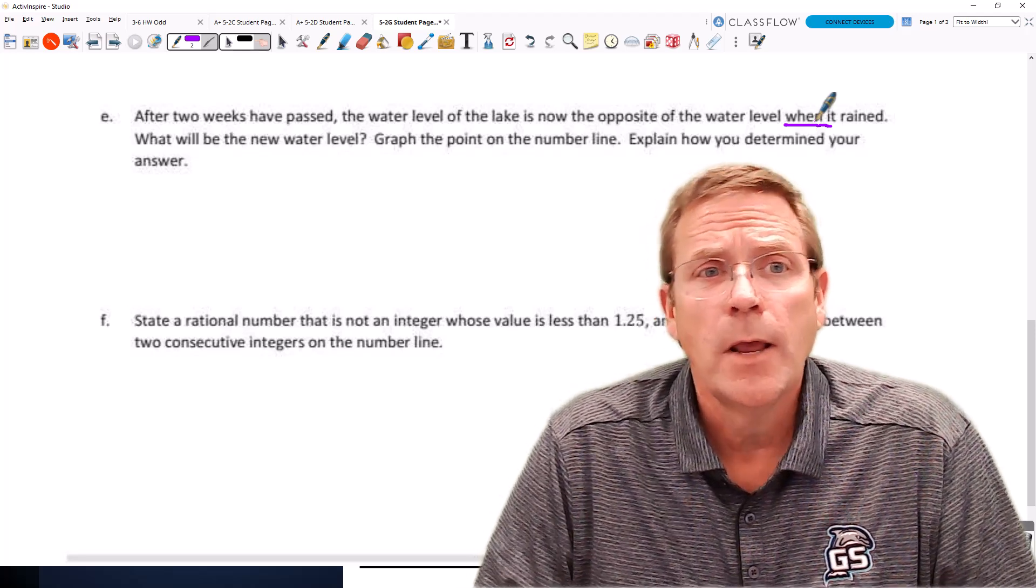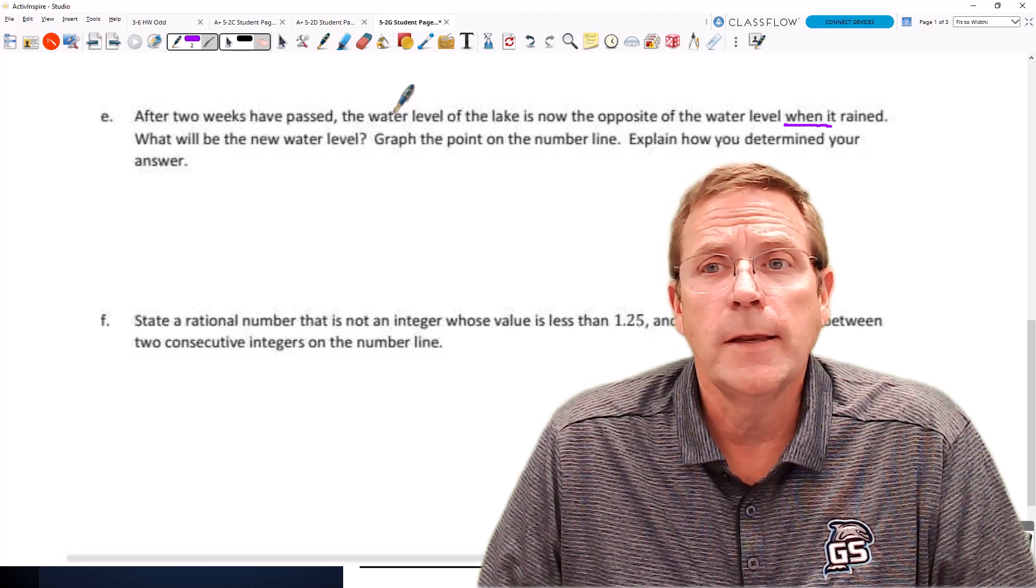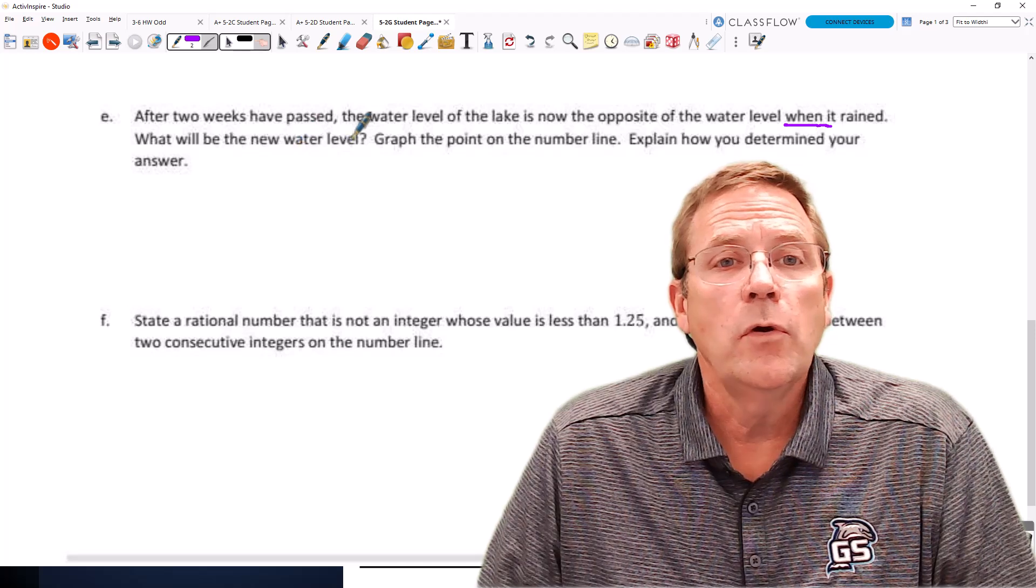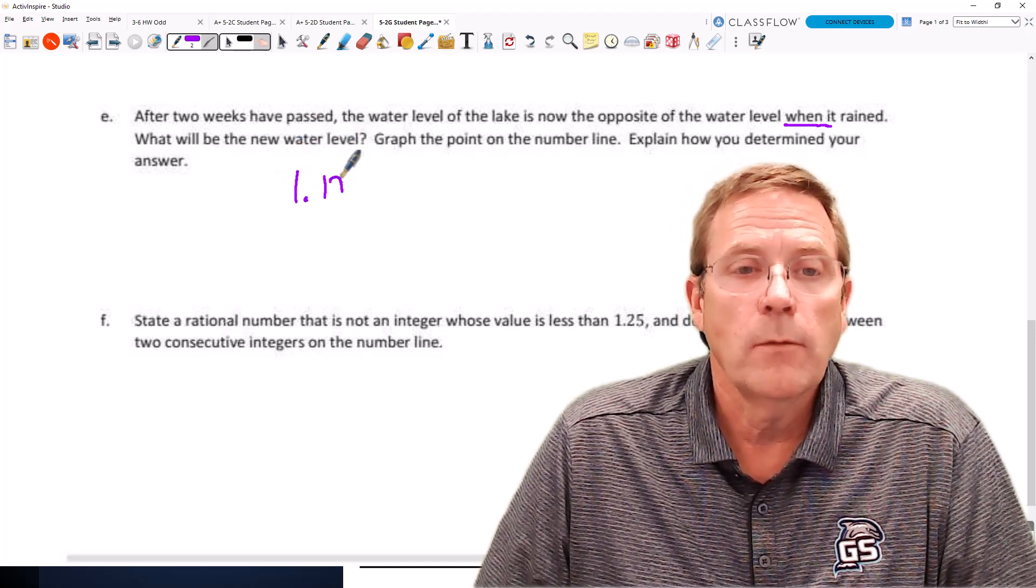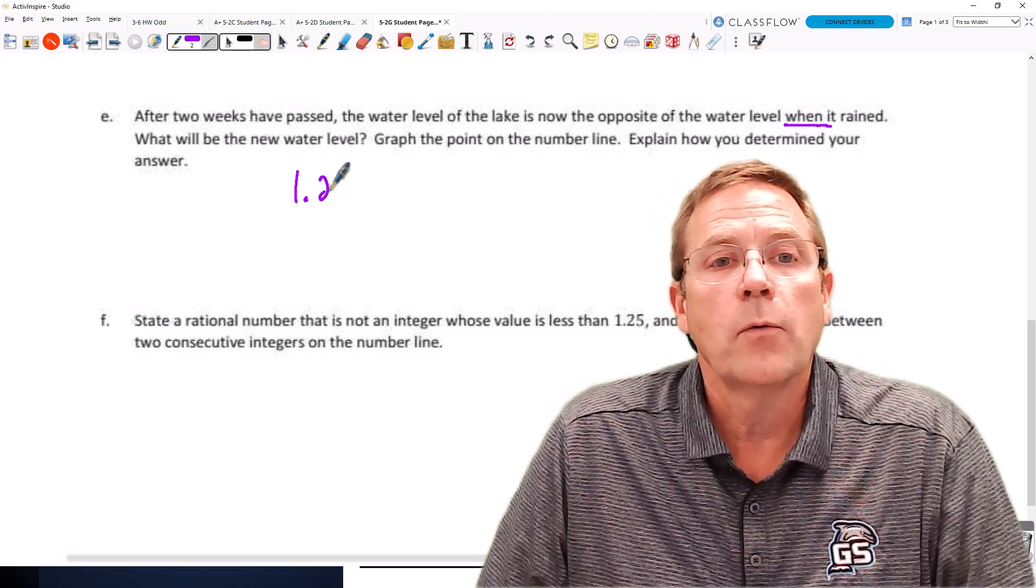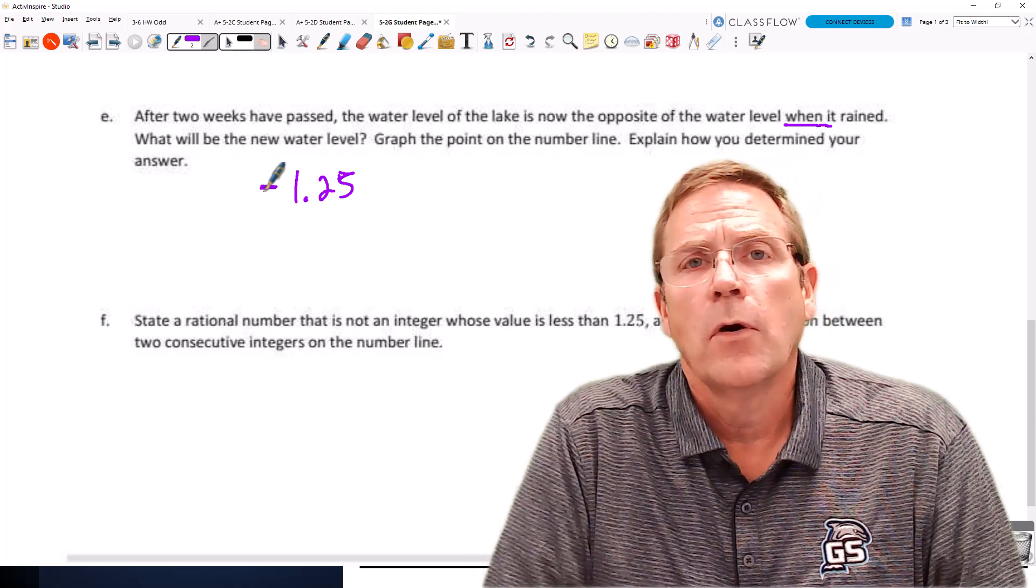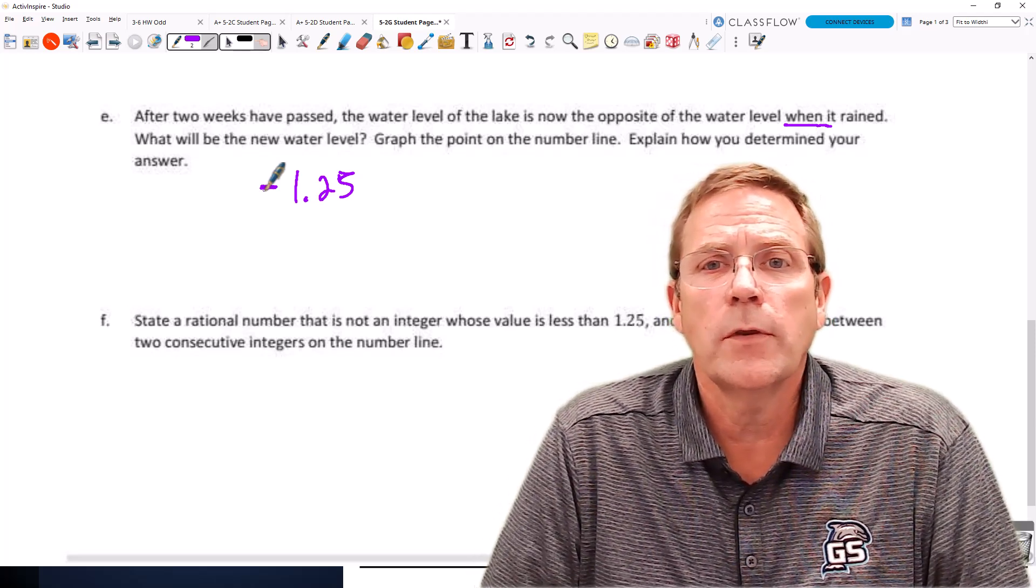What we're talking about here is after the rain stopped. So after the rain stopped, we were at a positive 1.25 feet, or 1 and 1/4 feet. So we want to know what's the new water level? Well, the opposite of 1 and 1/4 is negative 1 and 1/4, which goes in the opposite direction on the number line.